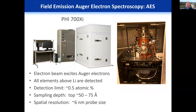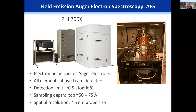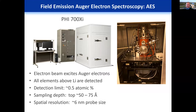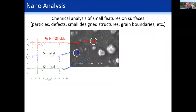Starting with Auger Electron Spectroscopy, referred to as AES. We have a PHI 5700 Xi instrument. By Auger, an electron beam excites Auger electrons; all elements heavier than lithium are detected; detection limits are about half an atomic percent; the sampling depth is about 50–75 angstroms; and for our instrument the spatial resolution can be defined by a probe size of about 6 nanometers.